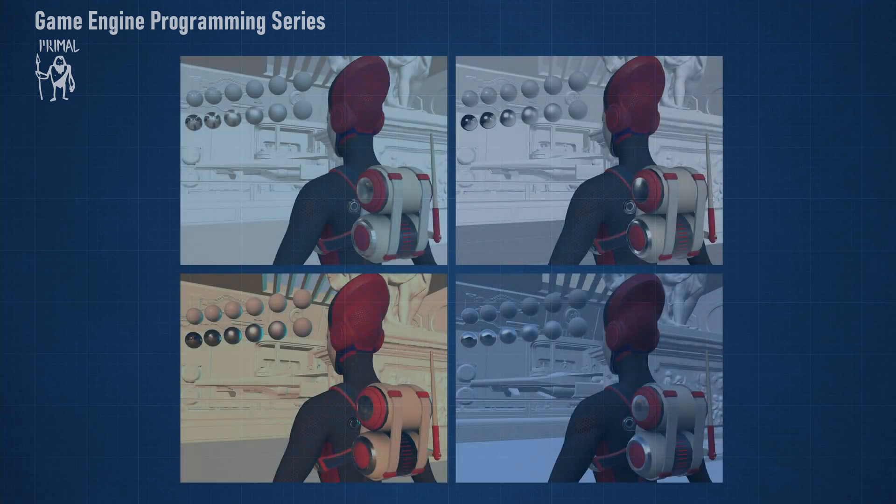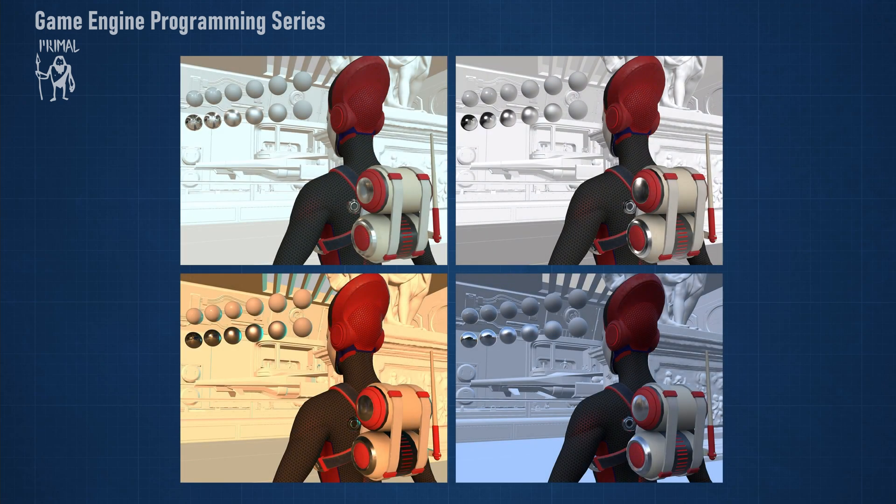Before wrapping up, I'd like to show the result of lighting the scene using four different environment maps. I hope you enjoyed watching this video and maybe learned something new about importance sampling and image-based lighting. As always, thank you for joining me and I'll see you next time.